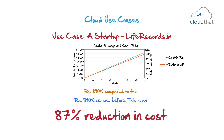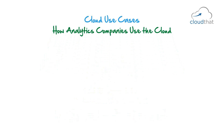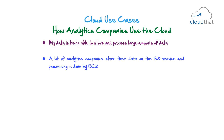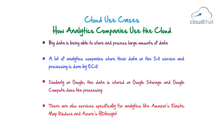How do analytics companies use the cloud? A lot of analytics companies use big data — the ability to store and process large amounts of data. Many analytics companies store their data on the S3 service and processing is done by EC2. Similarly on Google, data is stored on Google Storage and Google Compute does the processing. There are also services specifically for analytics like Amazon's Elastic MapReduce, which is a Hadoop cluster on demand, and Azure HDInsight, which is also a Hadoop cluster on demand.